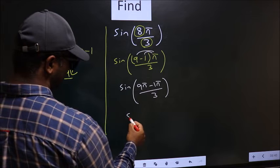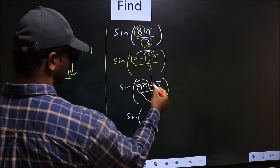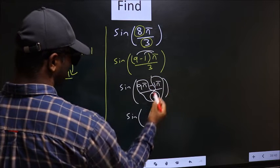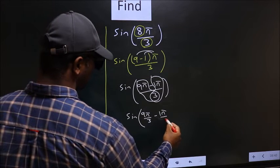Next, split the denominator in this way. So you get 9π/3 minus 1π/3.